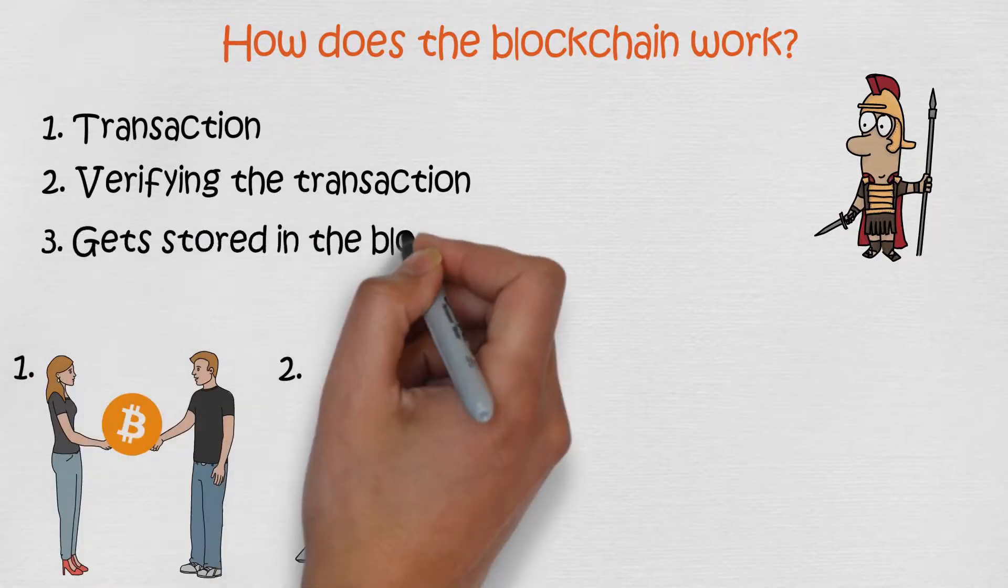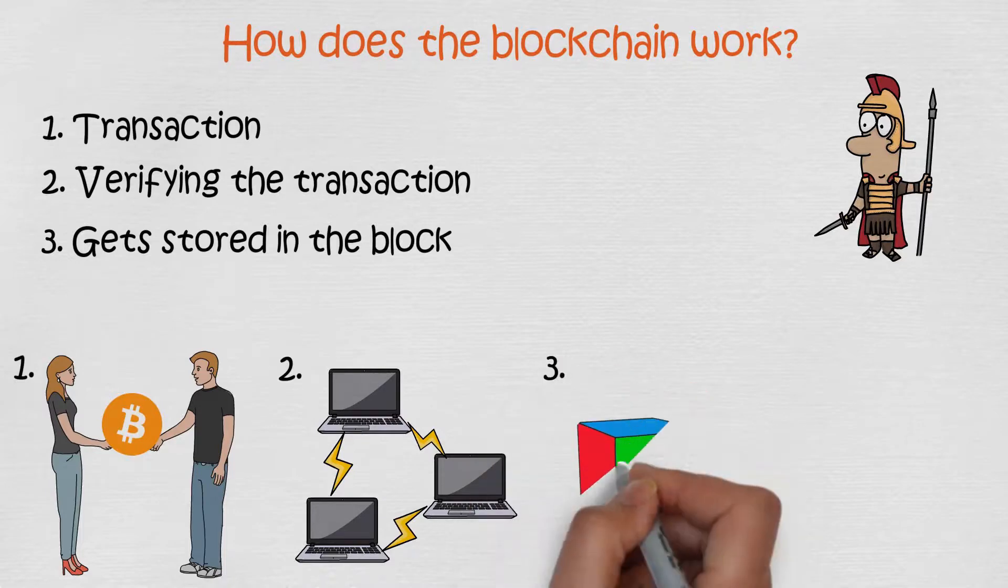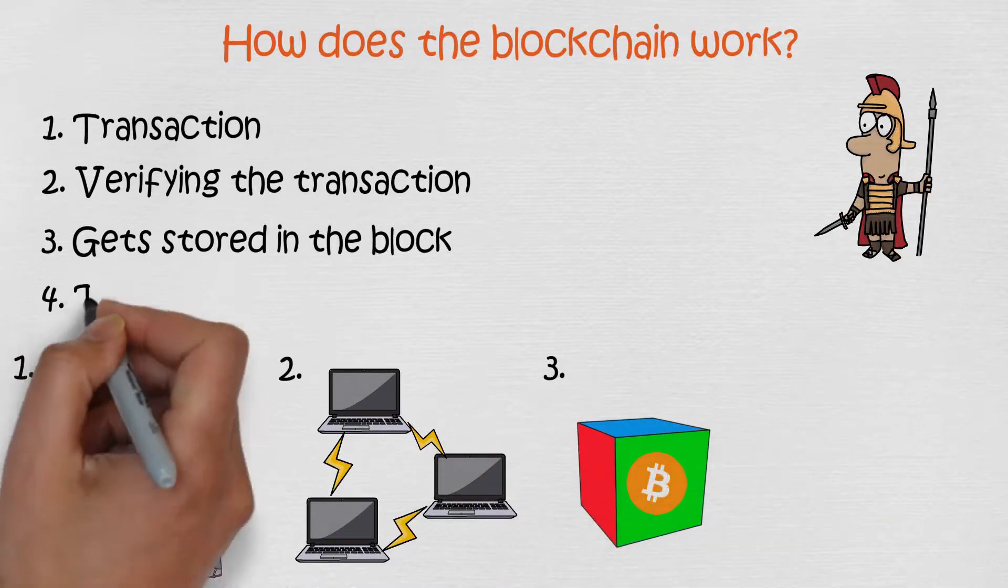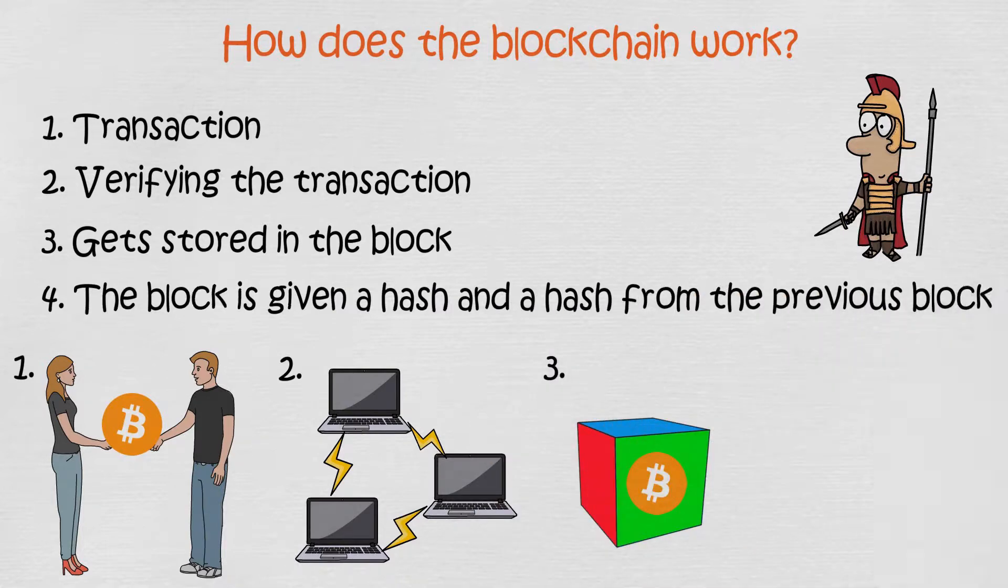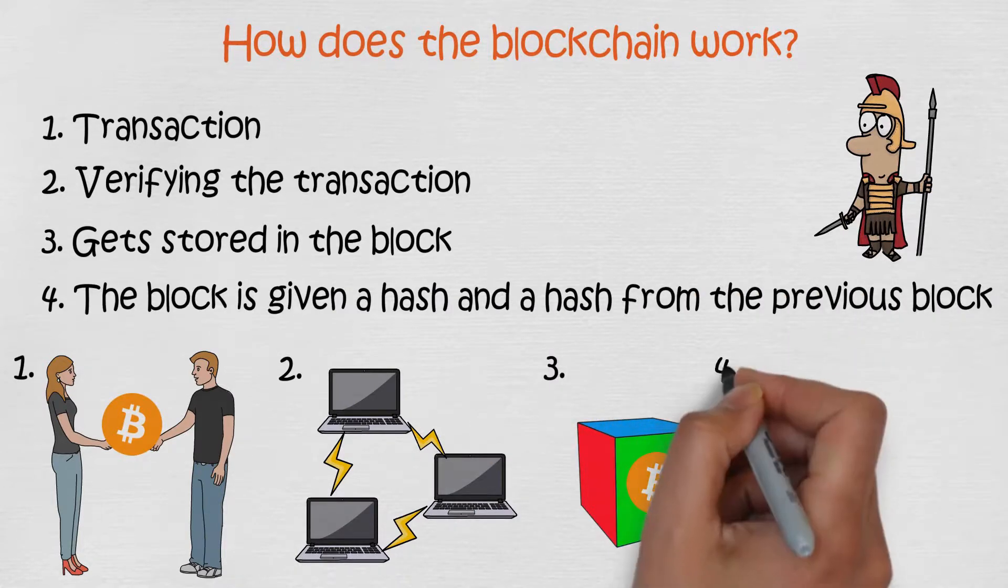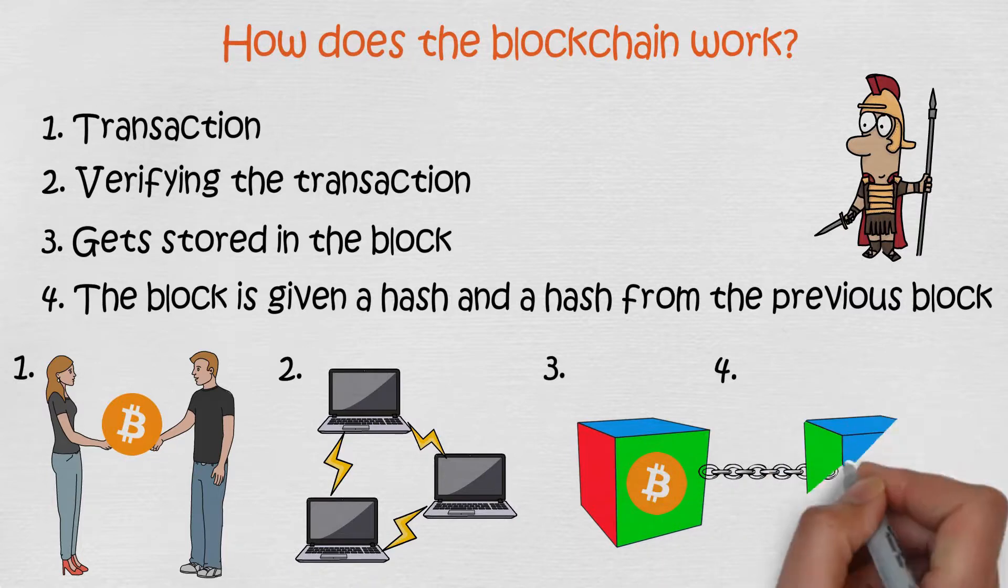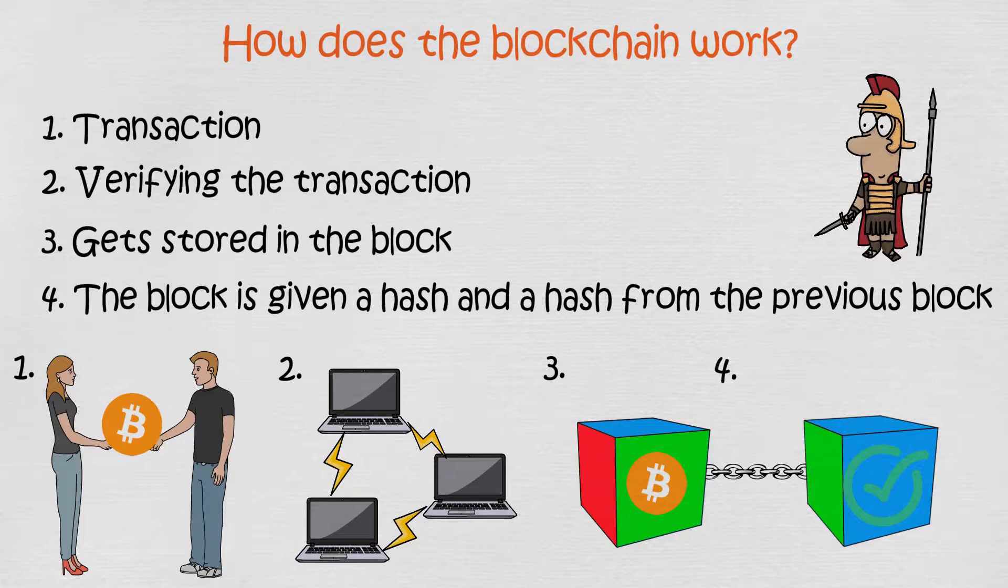After a transaction has been verified, it gets stored in the block. And lastly, the block is given a hash, the unique code that separates blocks from each other. The block is also given the hash of the most recent block added to the blockchain. This way those two blocks will be chained together. When the block gets added to the blockchain, it becomes available for anyone to see.